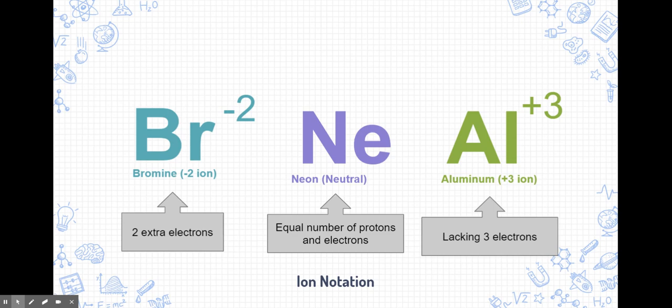Here's ion notation. This is how we would write in textbooks and our notebooks ions for different elements. The one on the left is bromine, that's a negative 2 ion. So we would write a little 2, negative 2, at the upper right-hand corner. This means that this bromine has two extra electrons than it normally does. Neon in the middle is neutral. It does not have a charge. So in the upper right-hand corner, we don't write anything. That's because it has equal numbers of protons and electrons. It's neutral. Aluminum on the right-hand side is a positive 3 ion, so we write positive 3 in the upper right-hand corner. This aluminum has three less electrons than it normally does.